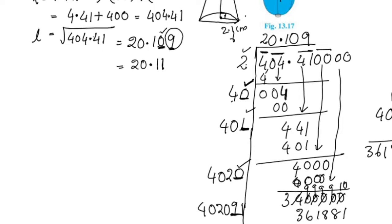We multiply to get 20.11. So the slant height L = 20.11 cm.